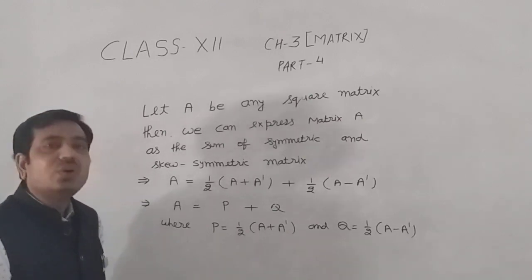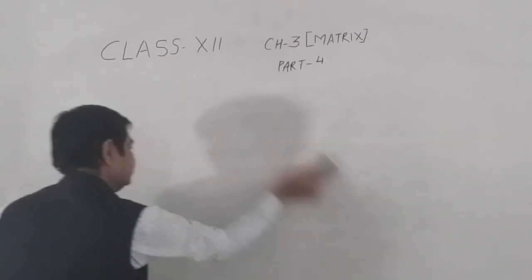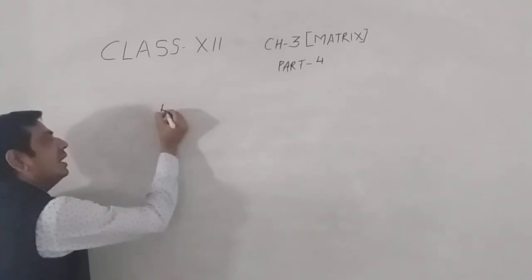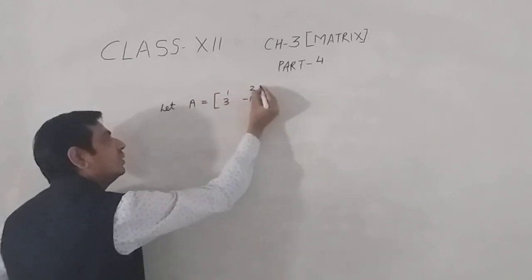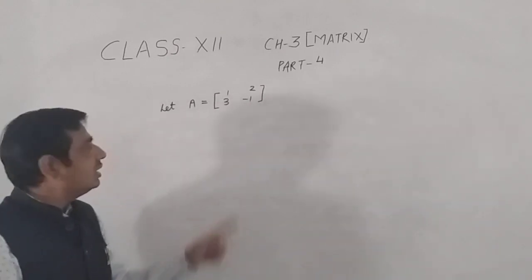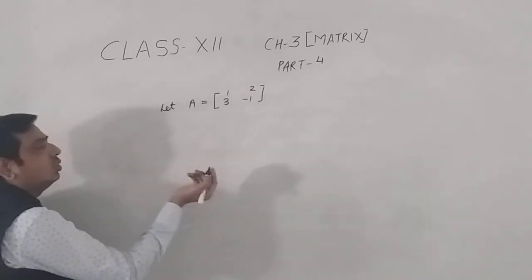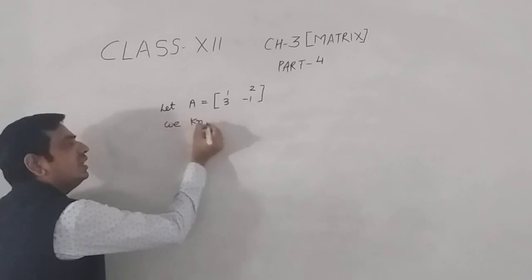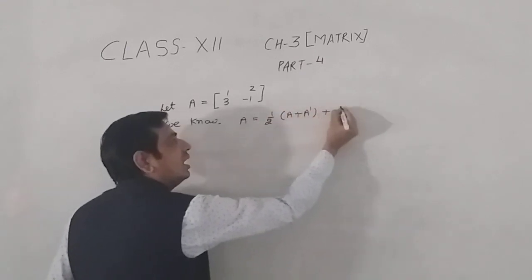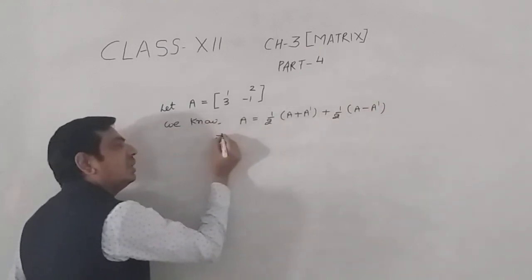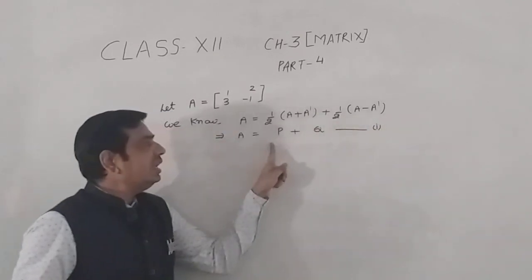Now let's take one example. The matrix is [1, 2; 3, -1] and we have to express this square matrix as a sum of a symmetric and a skew symmetric matrix. As we know, A equals half(A plus A') plus half(A minus A'), which gives A equals P plus Q.